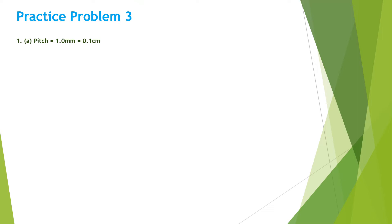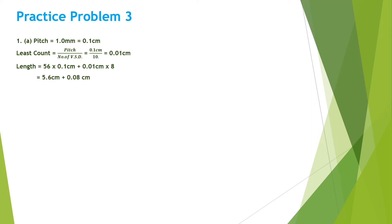Practice problem three, first part: pitch is given as 1 mm, which is 0.1 centimeter. Least count is pitch over number of vernier scale divisions: 0.1 centimeter over 10 equals 0.01 centimeter. The length is equal to 56 times 0.1 centimeter plus 0.01 centimeter times the 8th vernier division. That is 5.6 centimeter plus 0.08 centimeter, giving 5.68 centimeter.